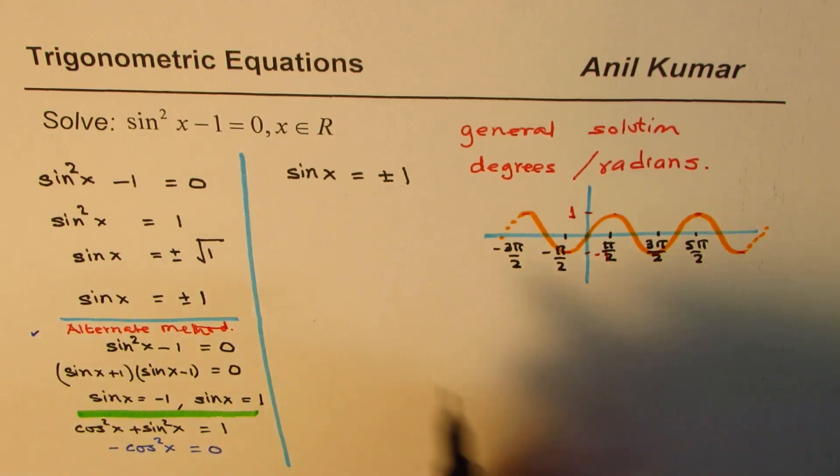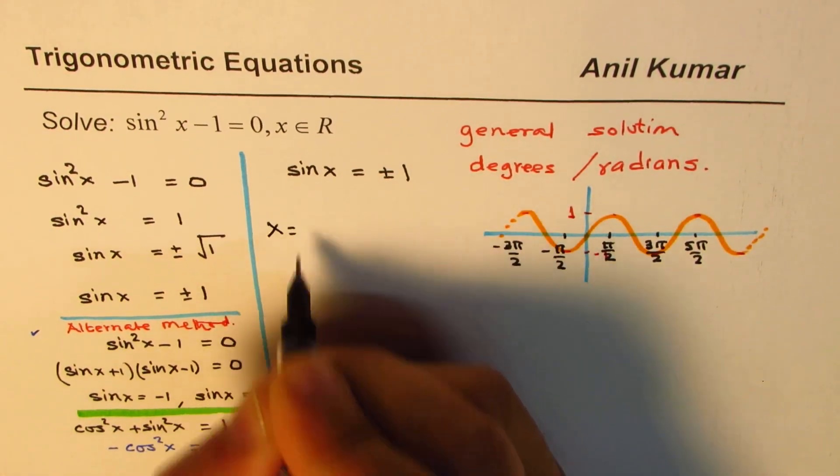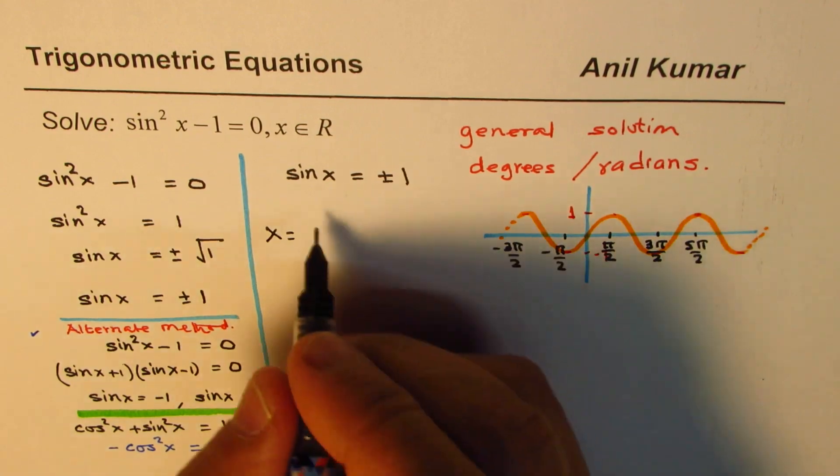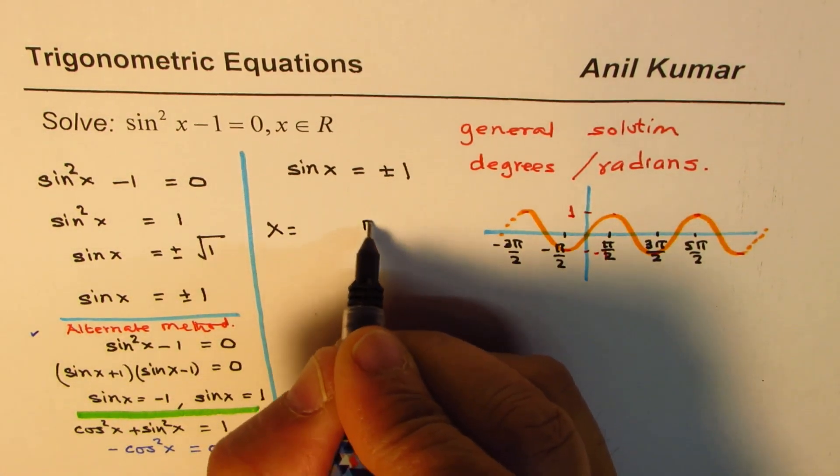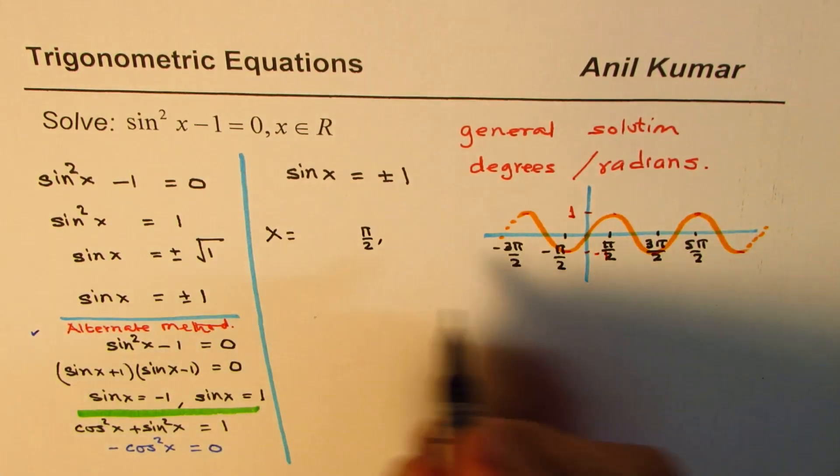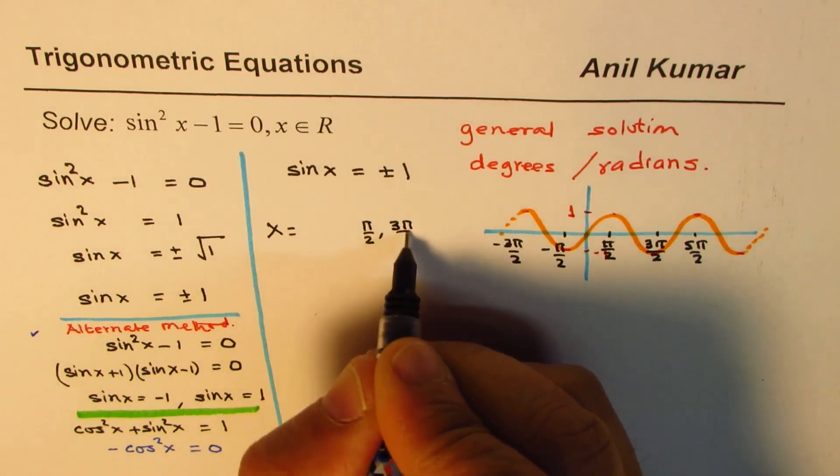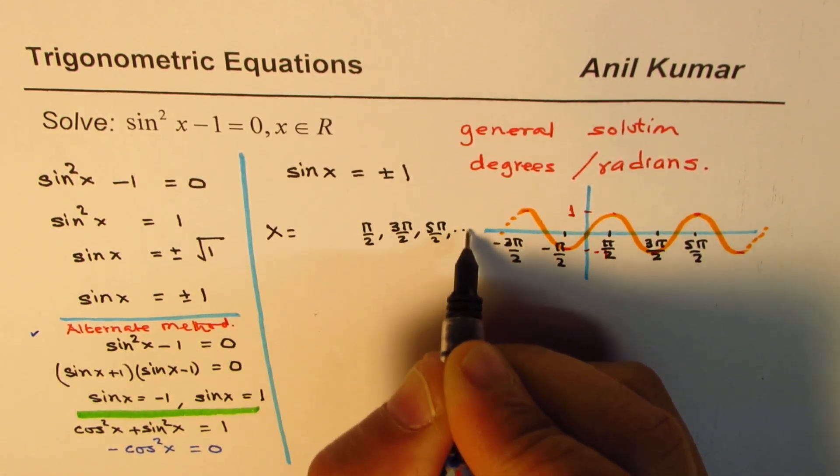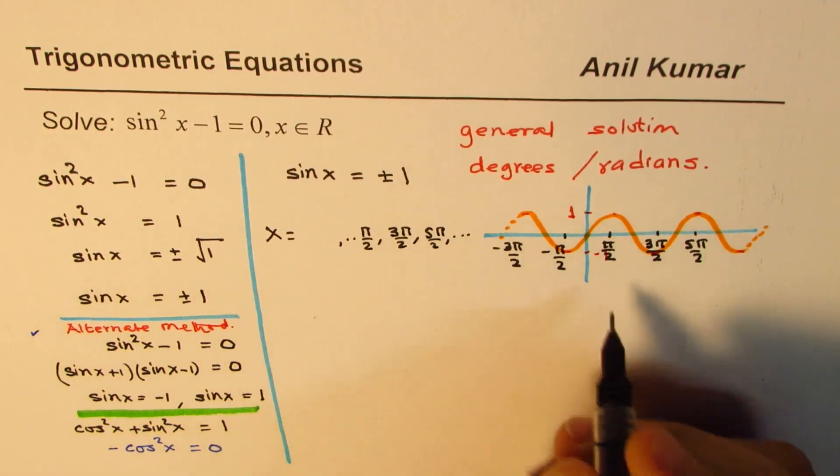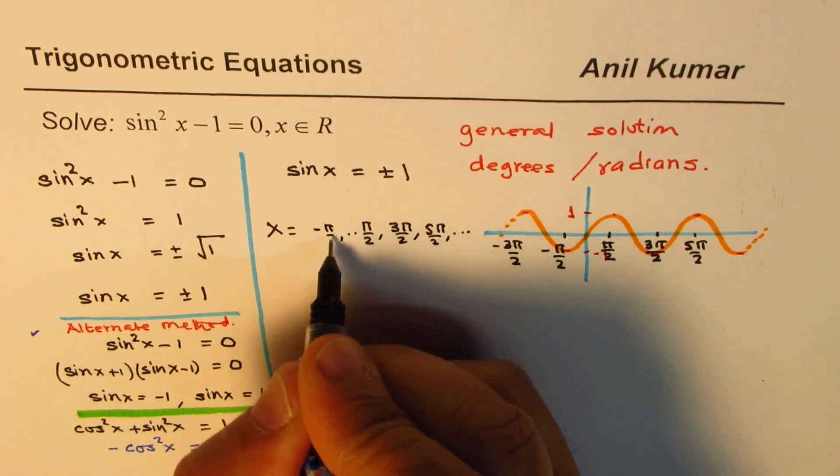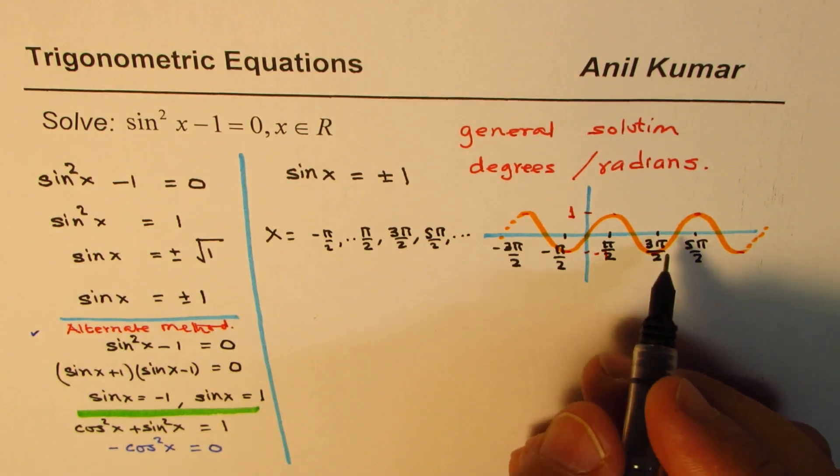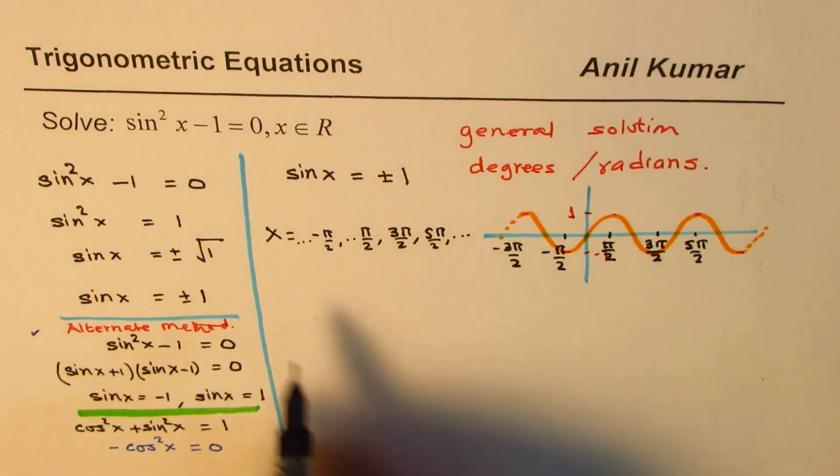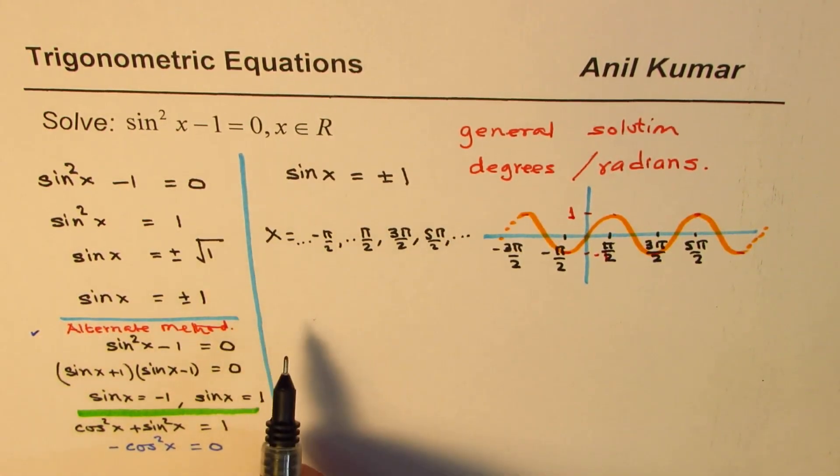So, the series is we could write x is equals to pi by 2, 3 pi by 2, 5 pi by 2, and so on. And on this side, it is minus pi by 2, and so on. So, you are looking for all these as a solution.